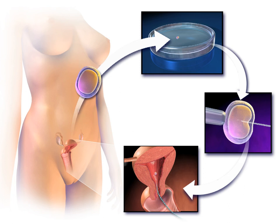Assisted reproductive technology procedures performed in the US have more than doubled over the last 10 years, with 140,000 procedures in 2006, resulting in 55,000 births. In Australia, 3.1% of births are a result of ART.